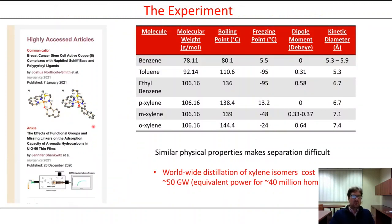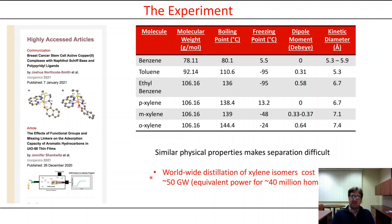We grew films of the UIO MOF onto a quartz crystal microbalance to measure the ability of these porous materials to absorb the BTECS family of compounds. BTECS stands for benzene, toluene, ethylbenzene, and xylene isomers. These are very important starting materials industrially, and the xylene compounds in particular are very difficult to separate due to their similar physical properties — an energy intensive separation requiring about 50 gigawatts of power annually, equivalent to powering 40 million homes. The kinetic diameter of these molecules is on the order of 5 to 7 angstroms, and the UIO MOF has a pore of about 11 angstroms, making it well suited to sequester these molecules.